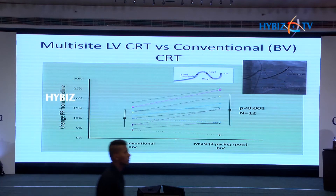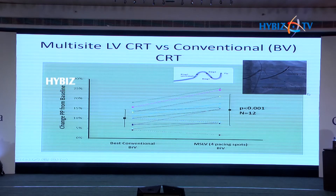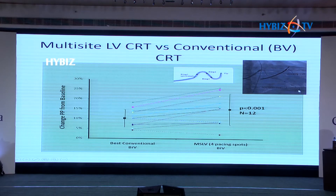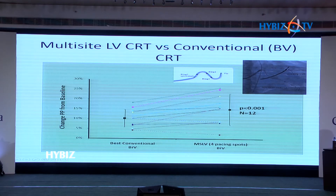One way of overcoming this technically is multi-point pacing — pacing the LV from more than one site within the same vein — to recruit a larger area of the left ventricular myocardium at the area of latest activation. This results in a significant improvement in responder rate and is used for patients considered to be non-responders.